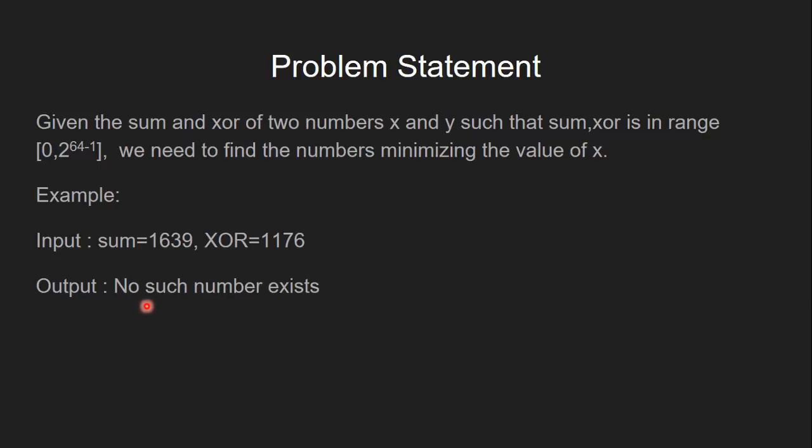Let's see another example. Here sum equals 1639 and XOR equals 1176. The output is no such number exists because for this combination of sum and XOR no pair of X and Y exists.